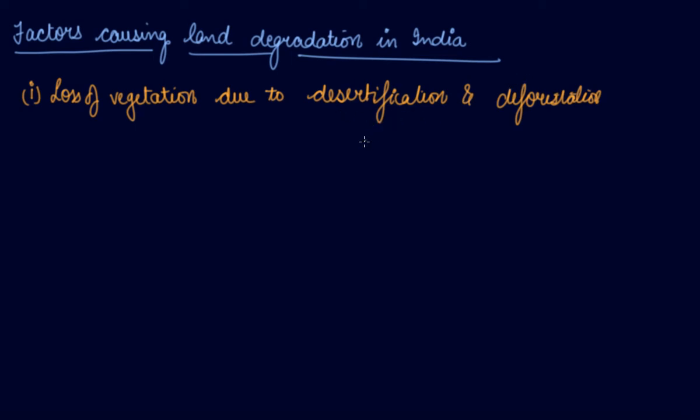Desertification means the spread of deserts. It occurs due to excessive grazing of cattle in the fields. Second is multiple cropping.